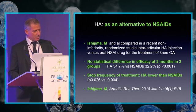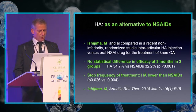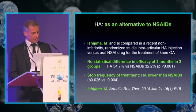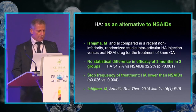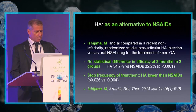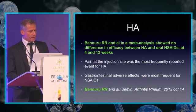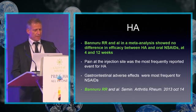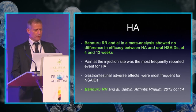HA as an alternative to NSAIDs: Ishezima and Kohl compared, in a recent non-inferiority randomized study, intra-articular HA injection versus oral NSAID drugs for knee osteoarthritis. There was no statistical difference in efficacy at three months between the two groups. Stop frequency of treatment was lower for HA than for NSAIDs. Banu and Kohl, in a meta-analysis, showed no difference in efficacy between HA and oral NSAIDs at four and twelve weeks. Pain at the injection site was the most frequently reported event for HA, while gastrointestinal adverse effects were most frequent for NSAIDs.